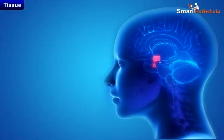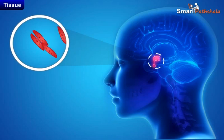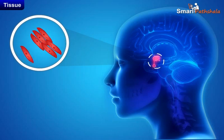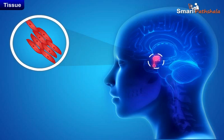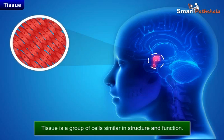This means that a particular function is carried out by a cluster of cells at a definite place in the body. This cluster of cells is called a tissue, arranged and designed to give the highest possible efficiency of function. In other words, tissue is a group of cells similar in structure and function.